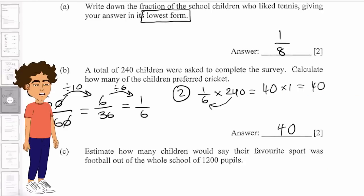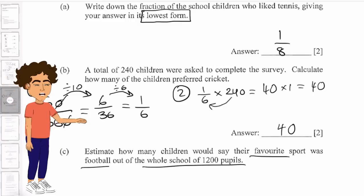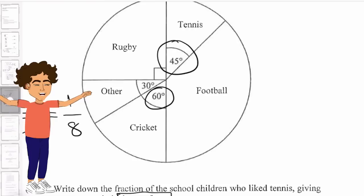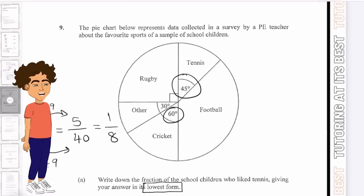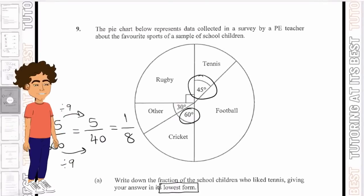Let's go for part C. Let's estimate how many children would say their favorite sport was football out of the whole school of 1200 pupils. So now let's go ahead and work out the degrees in terms of football.